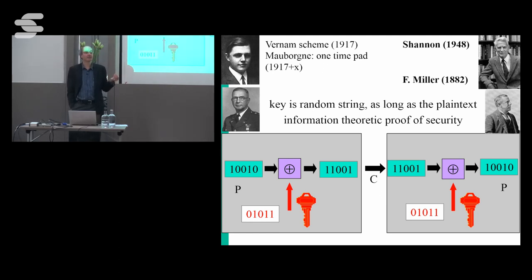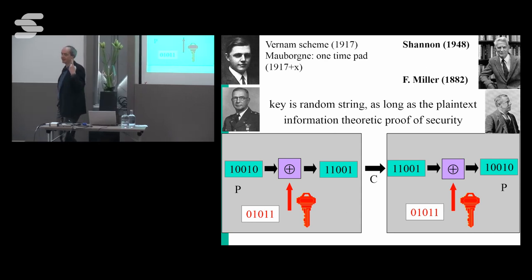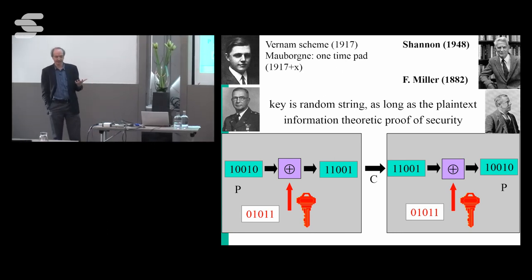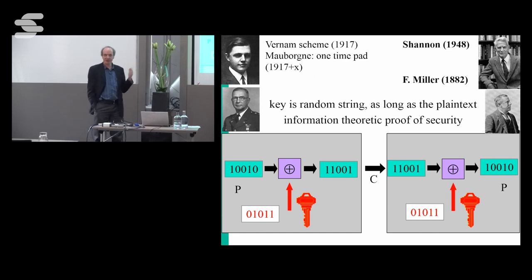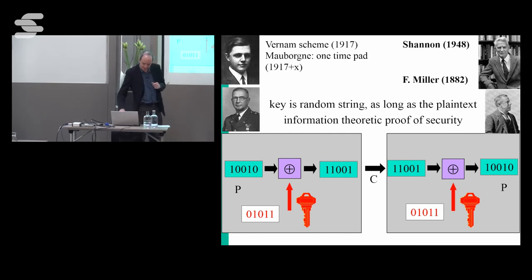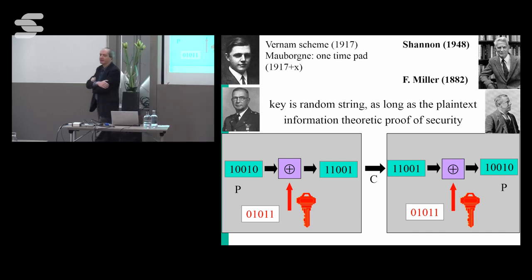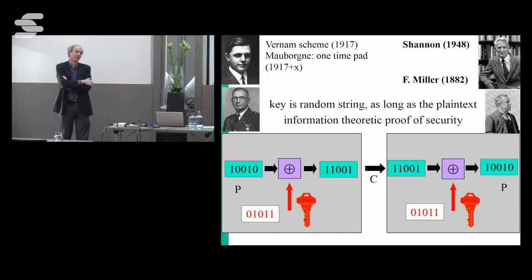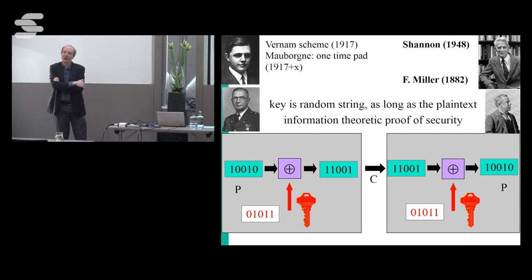Anybody using the one-time pad here? Why not? Because you can use your key only once — your key is as long as the message, and you can only use it once. There are still diplomats using it — it was used for the red telephone between Moscow and Washington until the late 80s. The Russians used the one-time pad but used it twice because they printed their keys four times. The Brits and Americans discovered this — this is known as Venona — and some people were caught and executed as a consequence of this very big mistake of using your one-time pad twice.